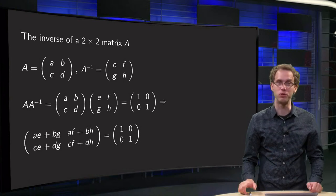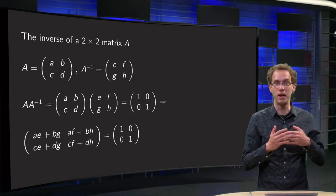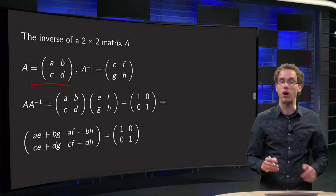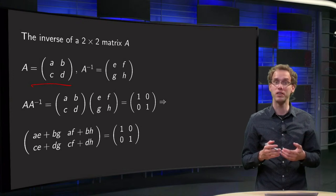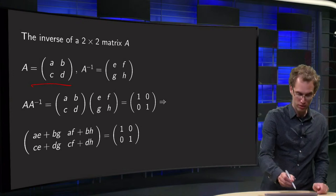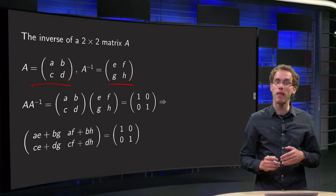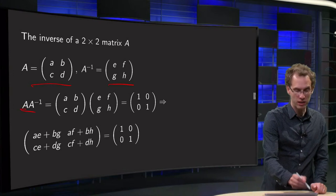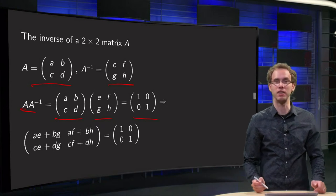So, can we find the inverse of a 2x2 matrix A? Let us call A = [[a, b], [c, d]], so the general matrix A. So, if the inverse exists, A inverse, then it will also be a 2x2 matrix, so A inverse has to be [[e, f], [g, h]]. And if it exists, then A times A inverse has to be the identity matrix.